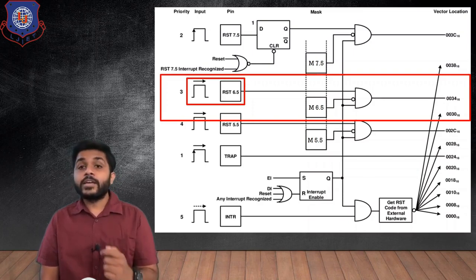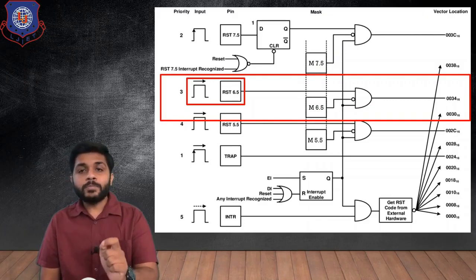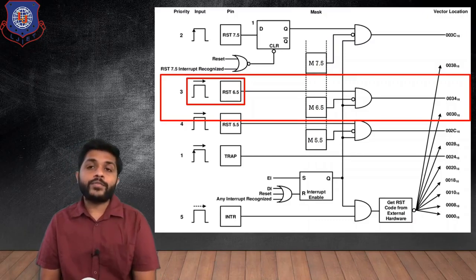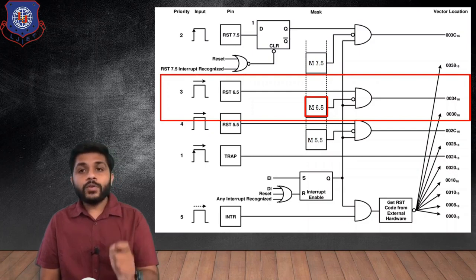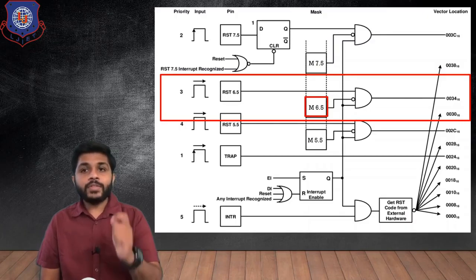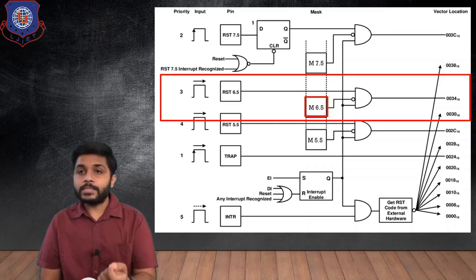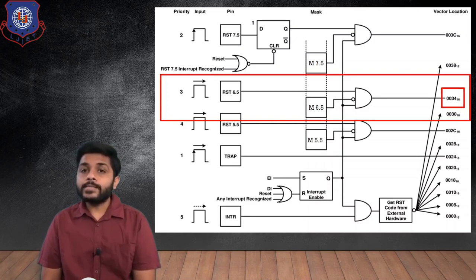The RST 6.5 interrupt is level triggered, which means in order to detect this interrupt the signal at the RST 6.5 pin should be high for a particular amount of time. There is an M 6.5 bit — if its value is 1 the interrupt is masked; if the value is 0 the interrupt is unmasked. When unmasked, the processor will provide the vector location, which for RST 6.5 is 0034H.